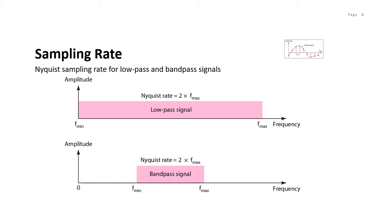In a low-pass analog signal, the bandwidth and the highest frequency are the same value because the minimum frequency is zero, so bandwidth equals the highest frequency. But if it is a band-pass analog signal, the bandwidth would be lower than the value of the maximum frequency. Here you can see the value of the sampling rate for the two types of signals.